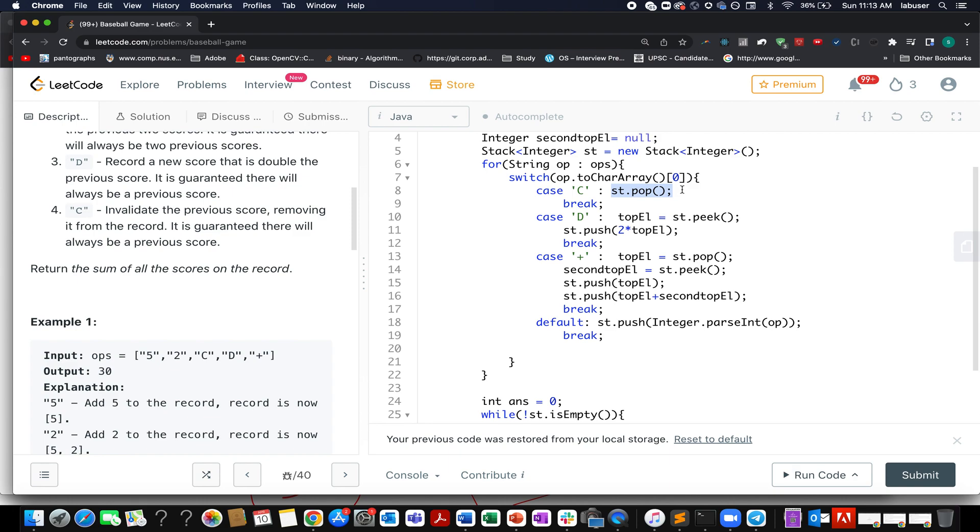So in case it matches with c, then what do you do? You simply remove the top most element. In case it matches with d, what do you do? You extract, you peek out the top most element, you multiply it with two and add it back onto the stack. In case of a plus sign, what do you do? You extract the top most element, you extract the second top most element using the peek operation and then you push the top most element back. You push the top most element plus the second top element onto the stack. Remember this order is important. If you mess up this or screw up this order, you are going to get incorrect result.